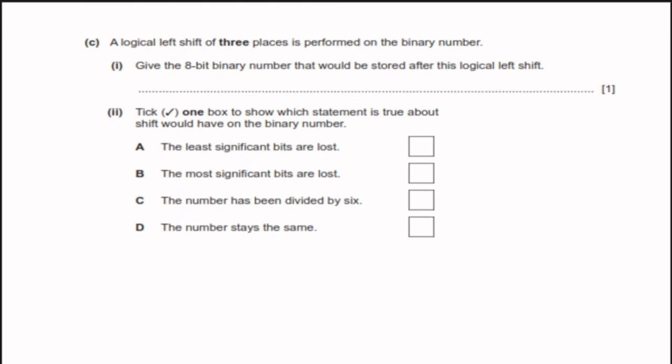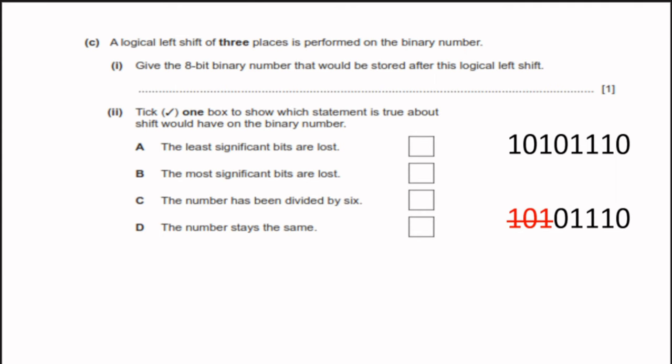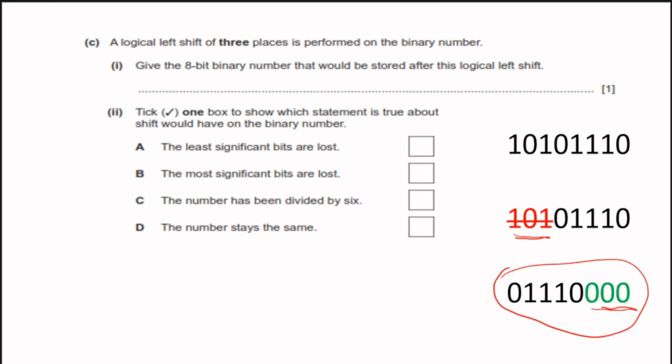Part C: a logical left shift of three places is performed on the binary number. To find the 8-bit binary number stored after the logical left shift, we delete the three left bits and then add three zeros on the right side. This gives us our answer.